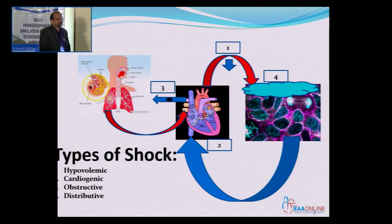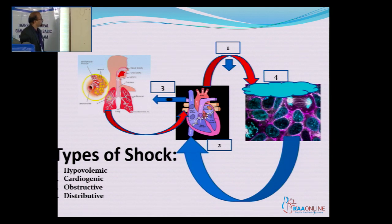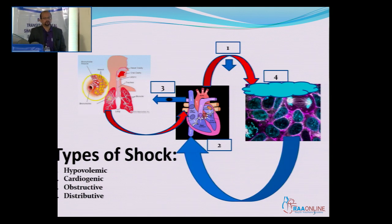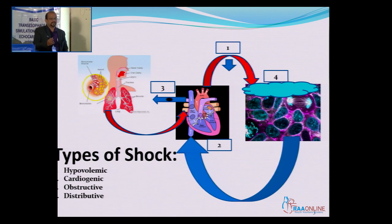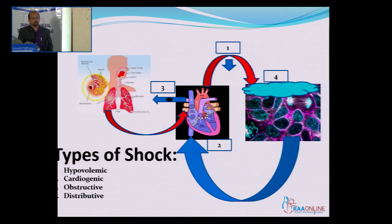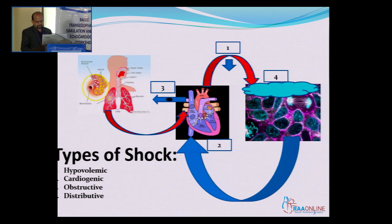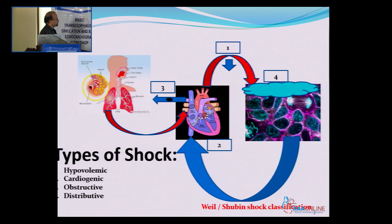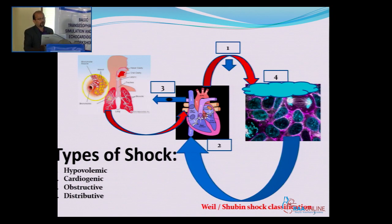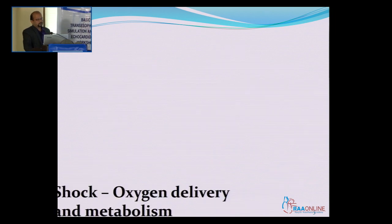There is also a situation where there is a lot of fluid accumulation in the interstitial space, so the oxygen reaching the tissues is not able to traverse through that material collected outside and get there. That is a form of distributive shock, which includes varieties like septic shock, anaphylactic shock, and neurogenic shock. There are many classification systems for shock, but this is one of the more commonly used ones.